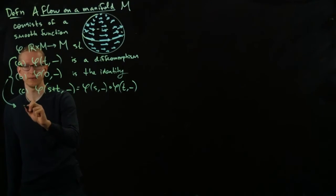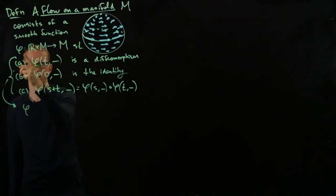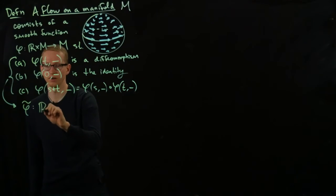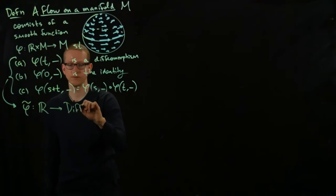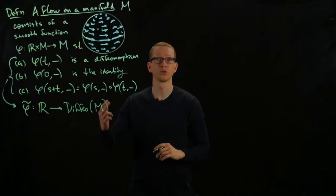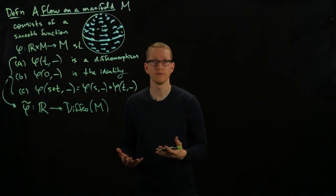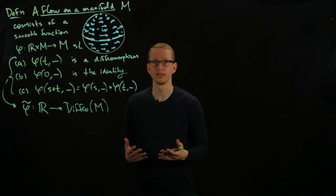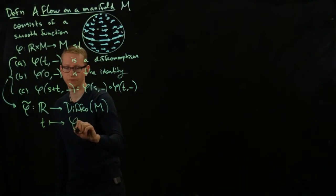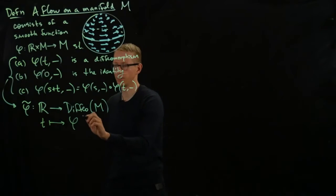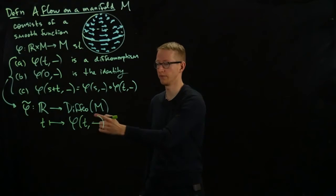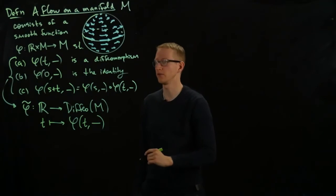And so we can replace this by saying that there's an associated map to this which I'll call φ tilde and this is a function from R to the set of diffeomorphisms of M and this is a group because whenever you compose diffeomorphisms they're always invertible by just taking the inverse function. And what I mean by the tilde here is that at t this function gets sent to a diffeomorphism of M given by having the right hand as the input variable. So this is a function from M to M and by assumption it's a diffeomorphism.